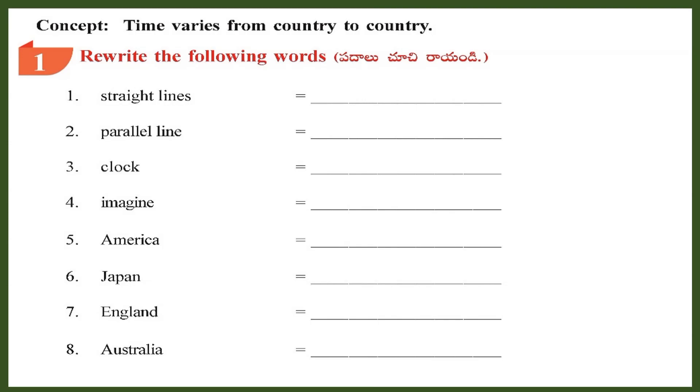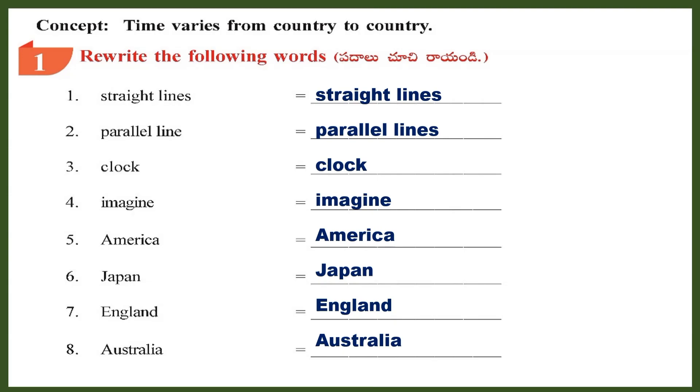Section 1: Rewrite the following words - Straight lines, Parallel lines, Clock, Imagine, America, Japan, England, Australia.